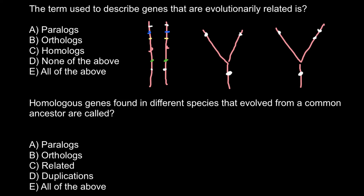So let's now choose the correct answer. The term used to describe genes that are evolutionarily related — we can choose paralogs and orthologs. For the second question, homologous genes found in the same organism — if in the same organism, we call those paralogs, so answer A.